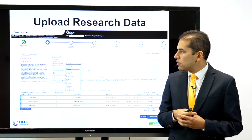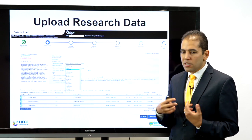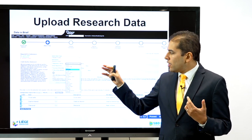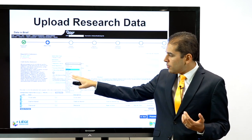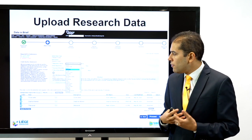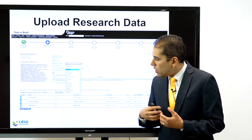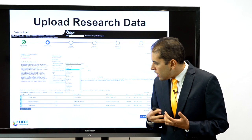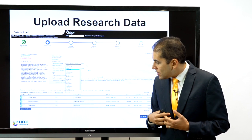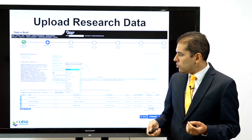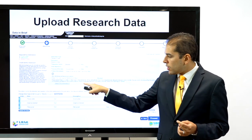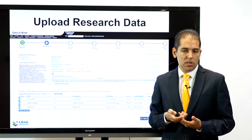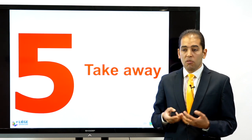When submitting a journal article, you will be asked whether you want to share your data. You say yes, define the dataset, and pick Zenodo from the list of available repositories — such as Harvard Dataverse, Dryad, ICPSR, Mendeley, NURSA, PANGAEA, Run My Code, SIMBAD, and others. You select Zenodo, enter the DOI of your publication, and your paper is linked to the dataset and the hosting repository.